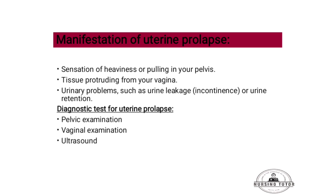The uterus and tissue protrude from inside the body. Urinary problems include urinary leakage or incontinence, urinary retention, and small leakage episodes.